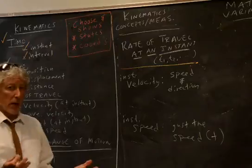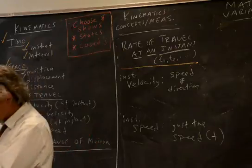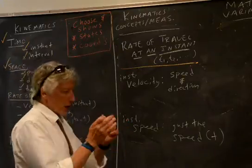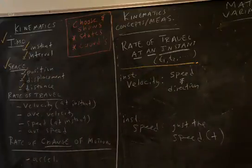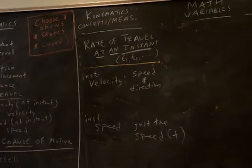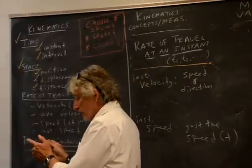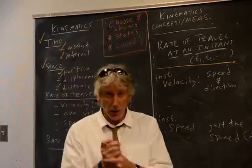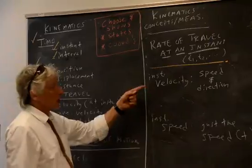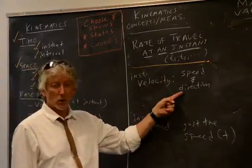Look at the speedometer: you can be going 60 miles an hour. It doesn't matter which way — your speed is still 60 miles an hour. However, if I go 60 miles an hour this way, I might call that negative 60 miles an hour; this way, positive 60 miles an hour. That's velocity. If you know the velocity, you know both the speed and the direction.